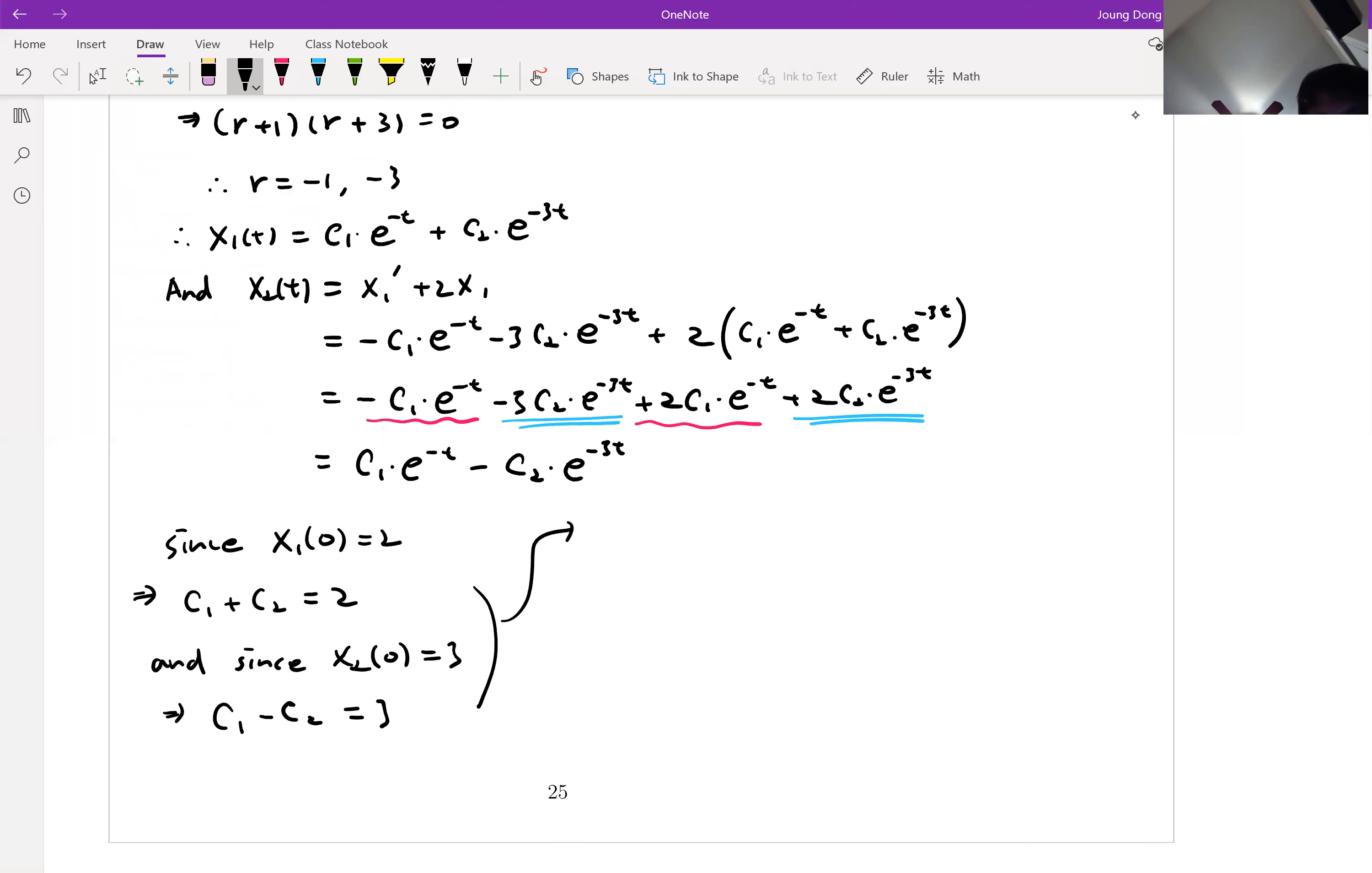Which is c1 plus c2 equal to 2 and c1 minus c2 is 3. Then we can do the elimination. Let's add up. Then c2 is gone. And we're going to have 2c1 equal to 5. And c1 is 5 over 2. Then we can easily find c2, which is negative 1 half. Is that clear?